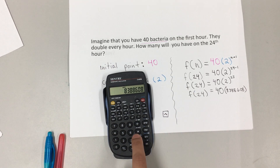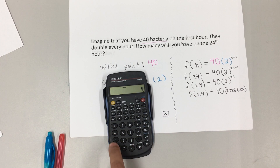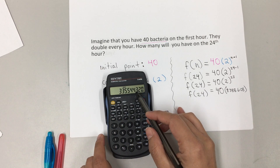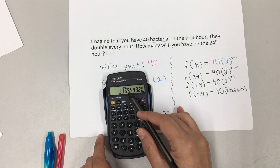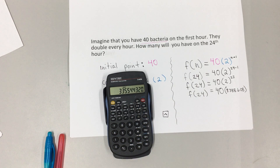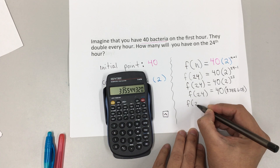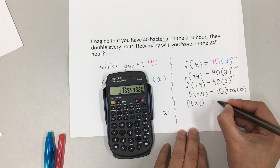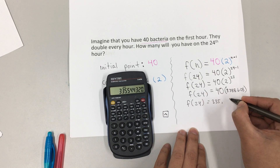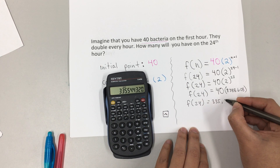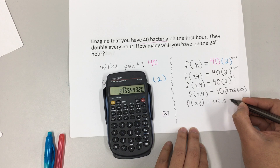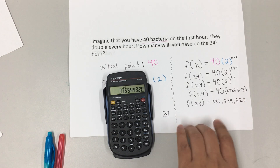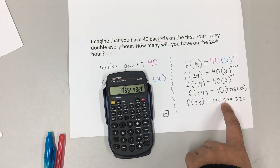Multiply that times 40 and press equal. We can see that is 335 million — so f(24) equals 335 million 544 thousand 320. That's how many bacteria there will be on the 24th hour.